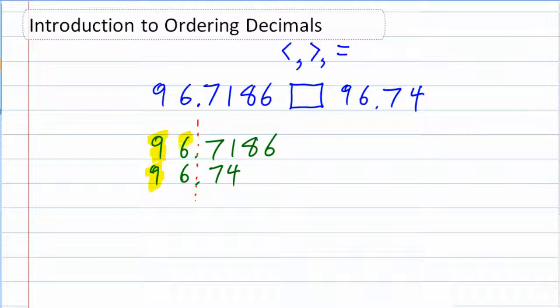Again, we have a tie in the ones place, six and six. So no problem. Every time we get a tie, we just go one step further.